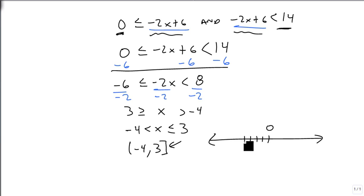So here's 0, 1, 2, 3, 4. Parenthesis at minus 4. Square bracket at 3. We have a little tiny black dot and we shade between them.